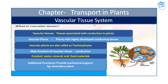Vascular tissue is tissue associated with conduction in plants, such as xylem and phloem. A plant with highly developed conducting tissue is called a vascular plant. Vascular plants are also called tracheophytes, and the main function of vascular tissue is conduction — conduction of water with minerals and food material.